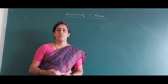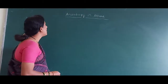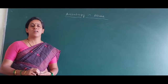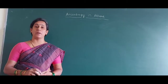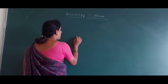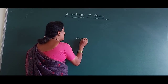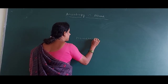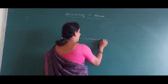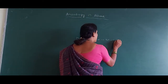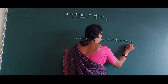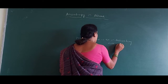Hello everyone, today we are going to discuss the anisotropy of alkenes. In the last lecture we discussed anisotropy of benzene — specifically, the anisotropic protons of benzene which lie in the deshielding zone area.